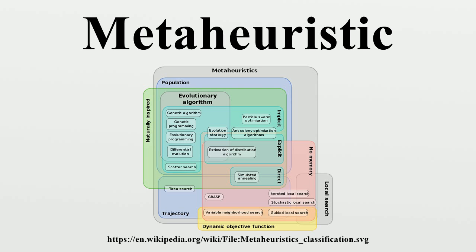Several books and survey papers have been published on the subject. Most literature on meta-heuristics is experimental in nature, describing empirical results based on computer experiments with the algorithms, but some formal theoretical results are also available, often on convergence and the possibility of finding the global optimum. Many meta-heuristic methods have been published with claims of novelty and practical efficacy.